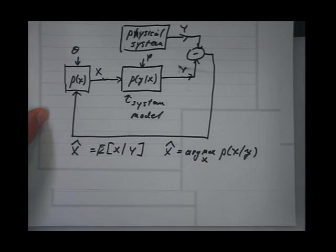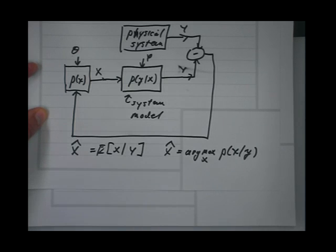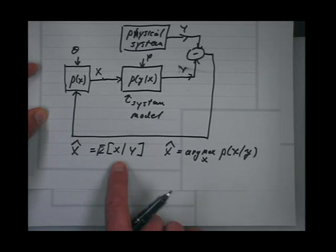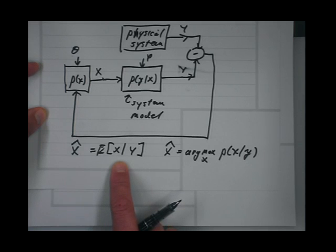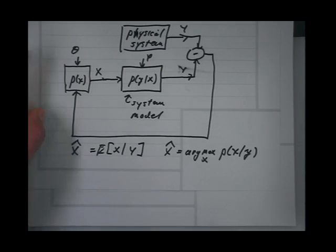There's no estimator that's uniformly better — it would require a definition of best. The conditional expectation minimizes mean squared error independently of the distributions of the variables. When you don't know the distribution, it might be better to have uniformly lower loss.